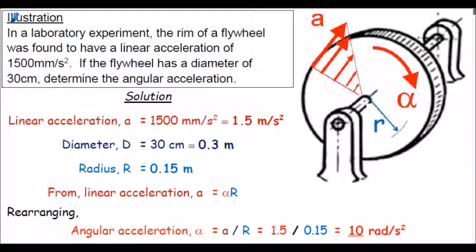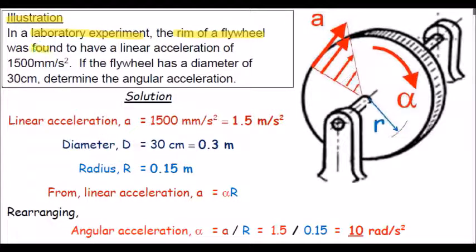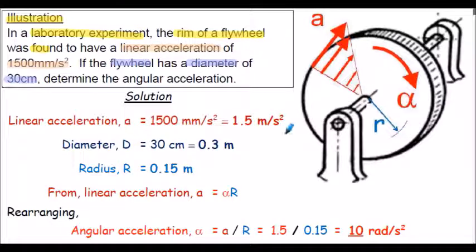Here's a brief illustration of how to use the formula a = αr as derived on the previous slide. In a laboratory experiment, the rim of the flywheel was found to have a linear acceleration of 1500 millimetres per second squared. If the flywheel's diameter is 30 centimetres, we need to calculate the angular acceleration of the flywheel.